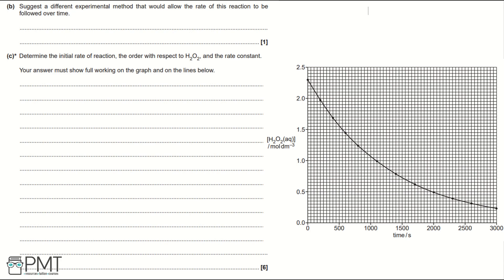Part B: suggest a different experimental method that would allow the rate of this reaction to be followed over time. What the mark scheme is looking for is to say 'measure mass lost.' The way you'd do this experimentally is to have the reaction take place on a mass balance and record the mass at regular time intervals, for example every 5 or 10 seconds. To get the mark, you need to say 'measure mass loss.'